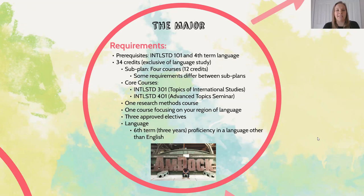The language requirement exists outside of the 34 major credits. We expect you to pursue your language to the sixth term — three years of proficiency as U of M defines it. It must be a language other than English, and not all languages qualify. There are specific approved languages on our website, and we focus mostly on spoken and modern languages. Feel free to reach out to an advisor if you have questions about your language.